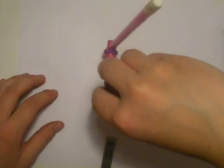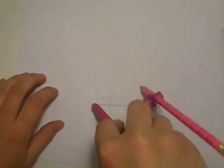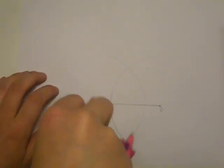Same thing for A, put our point on A and draw an arc. We're going to make sure we kept our compass at the same setting.